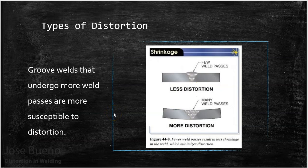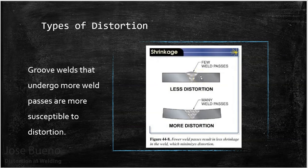With groove welds, multiple weld passes versus fewer passes also affects distortion. If we fill a groove more efficiently with each pass, there will be a little less distortion because there are fewer passes. Every time we deposit another weld, we increase the heat the part is taking on. Fewer weld passes means the part won't heat up as much, so there's less of a fight between the forces of expansion and contraction. Too many welds, regardless of speed, raises the temperature higher and creates more of that fight between expansion and contraction.